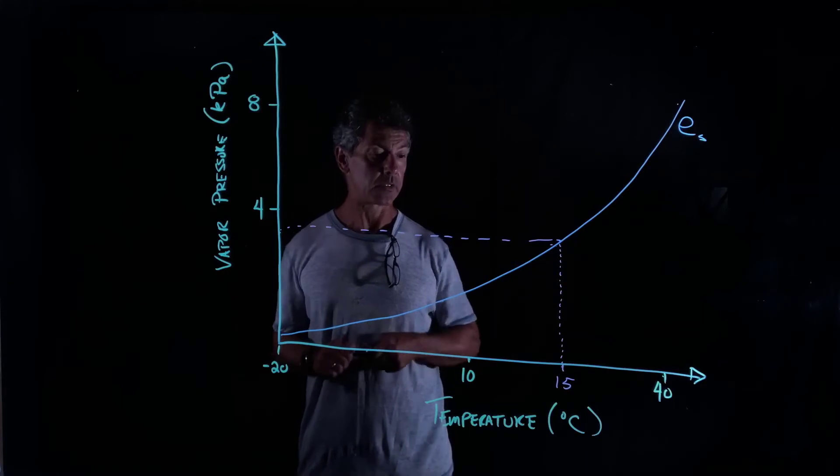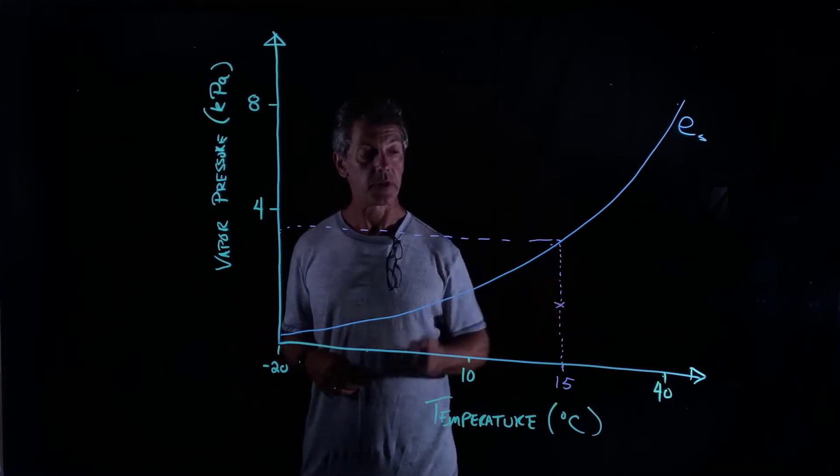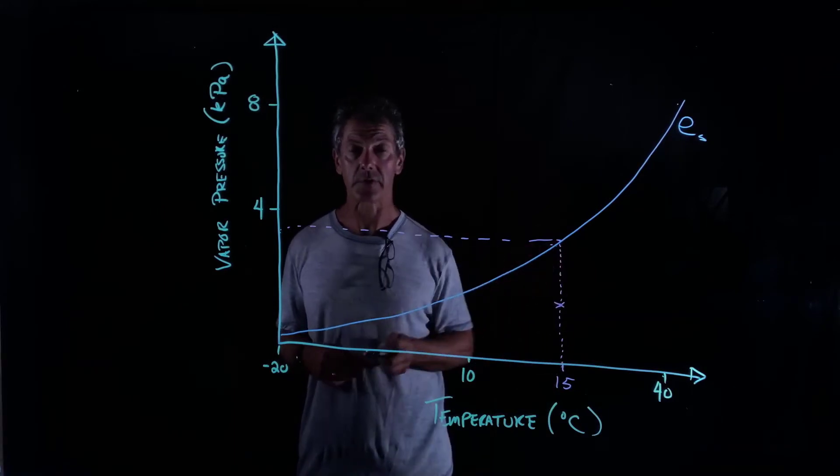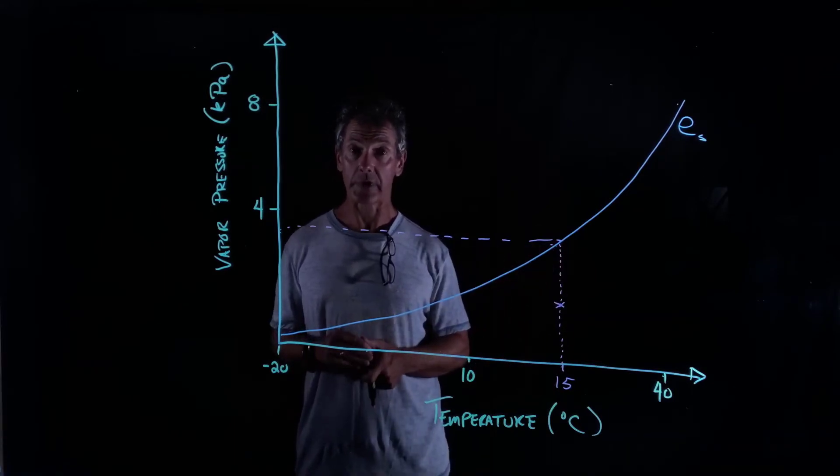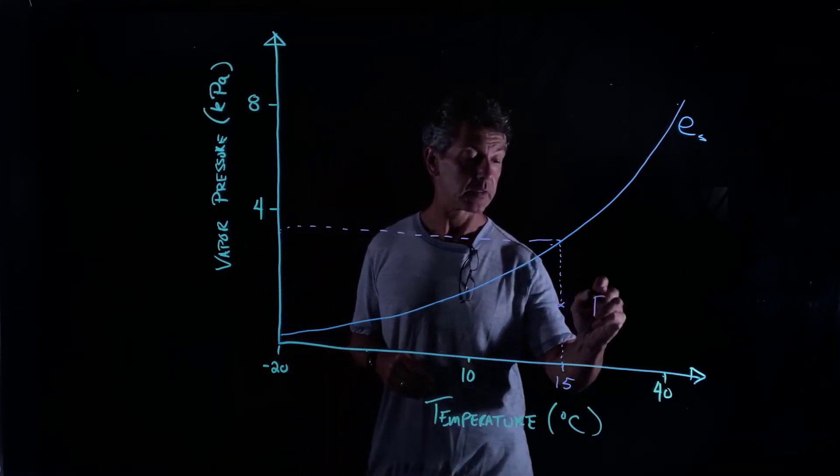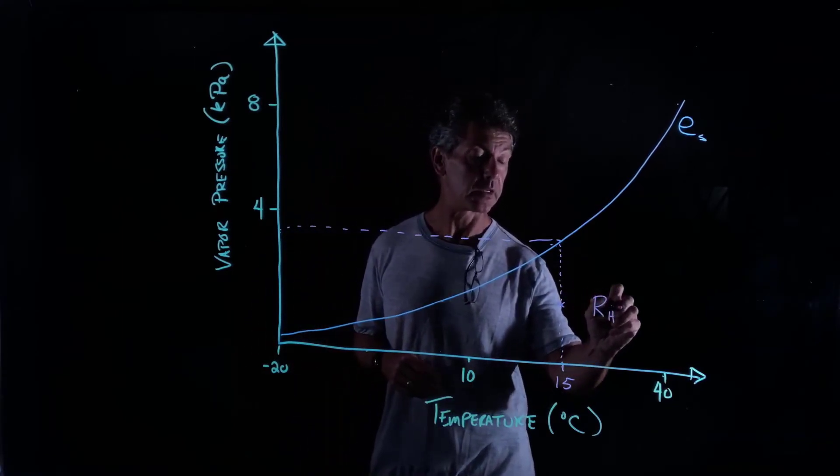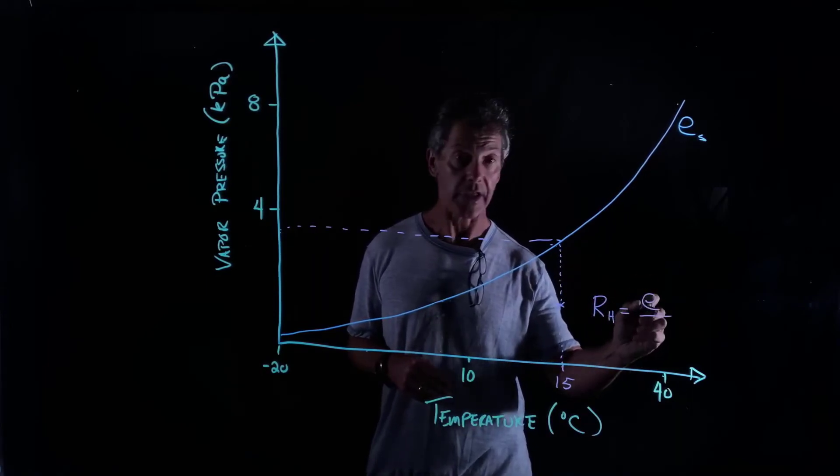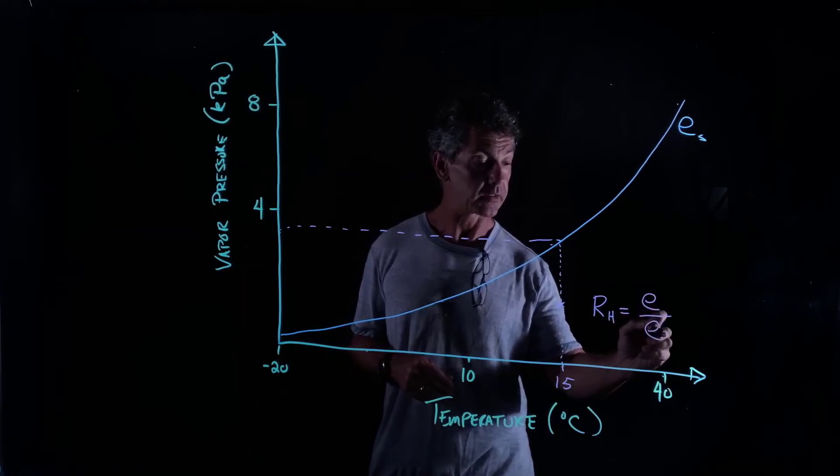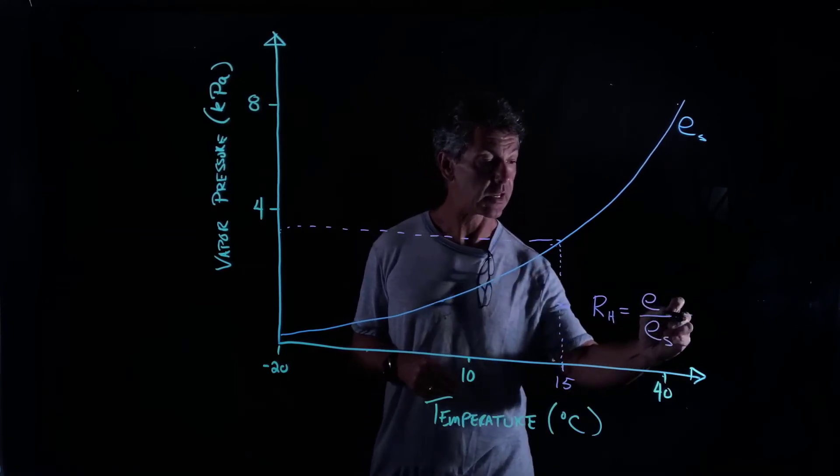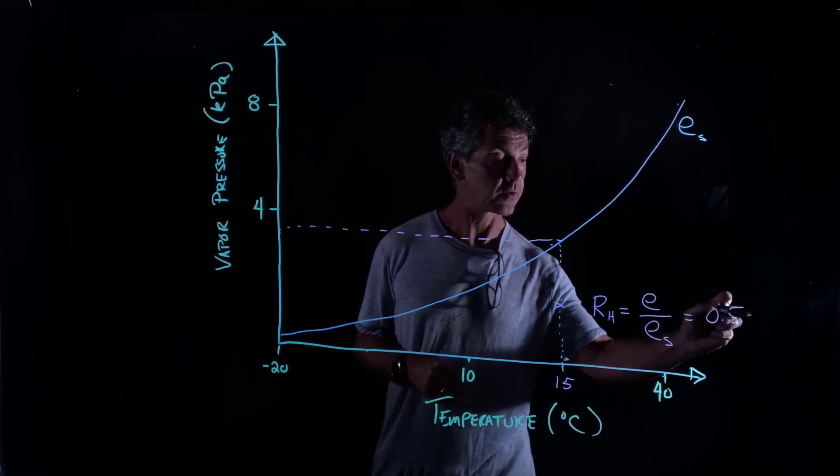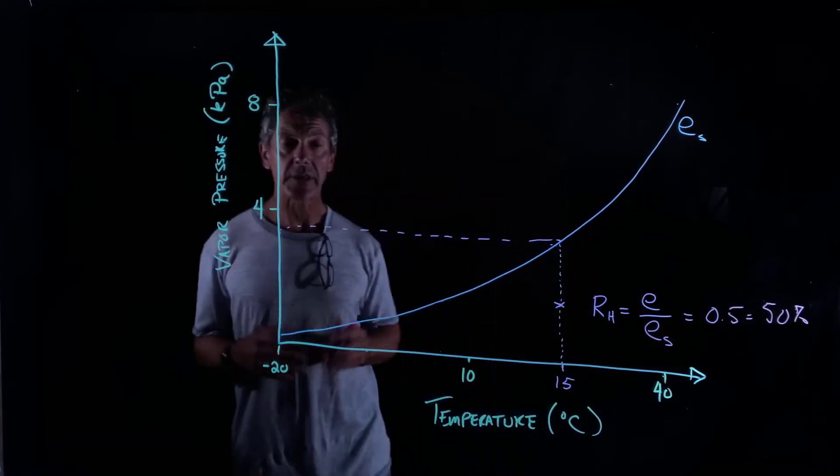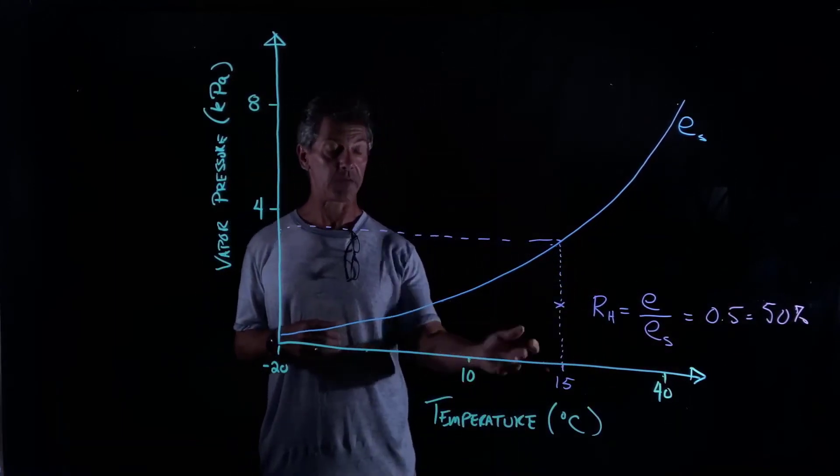So let's say we're here about halfway between no moisture in the air and saturation. Remember what we call that? That's called the relative humidity, and that's the vapor pressure in the atmosphere divided by the saturated vapor pressure. In this case, it's 0.5 or 50%. So let's say we're at 50% humidity at 15 degrees C.